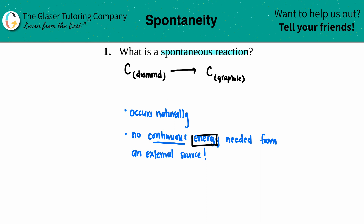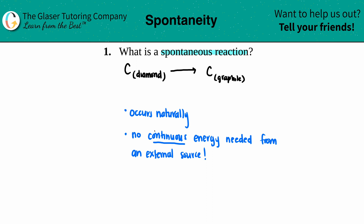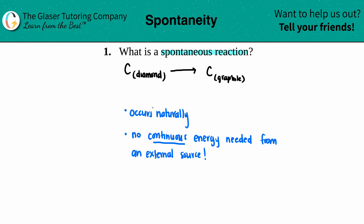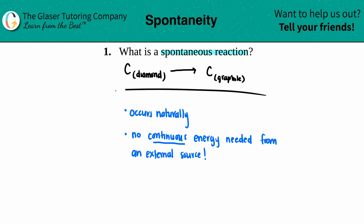Combustion does require a little bit of energy — the spark — but once you light a match to gasoline or any hydrocarbon, the fire starts and there is no continuous amount of energy needed through the whole process. That's basically what a spontaneous reaction is: it occurs naturally under certain conditions with no continuous external energy. On the flip side, if you are spontaneous in one direction, you are non-spontaneous in the other — meaning graphite will never turn into diamond.